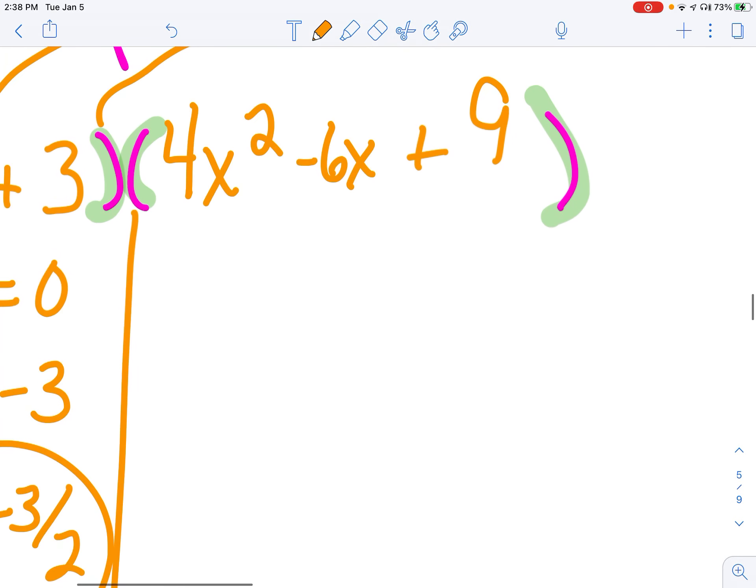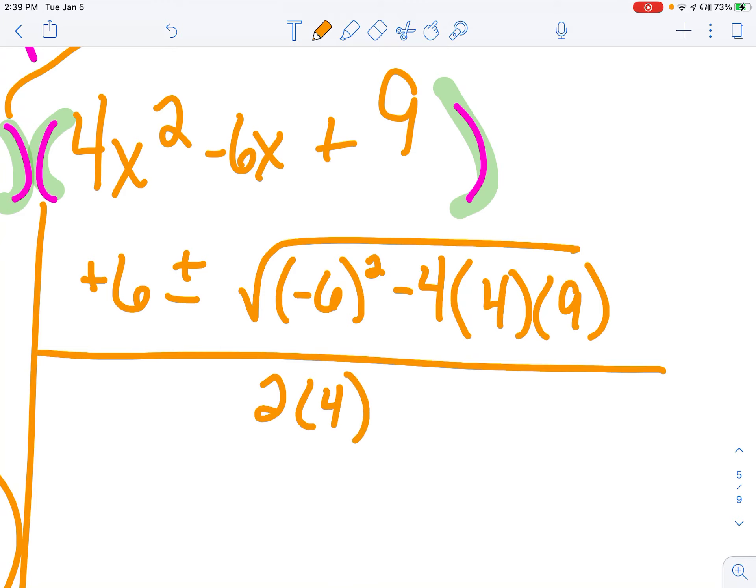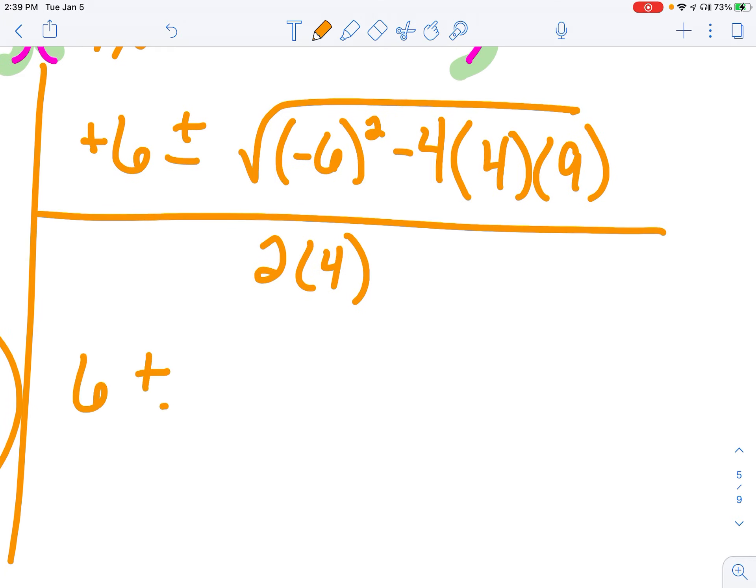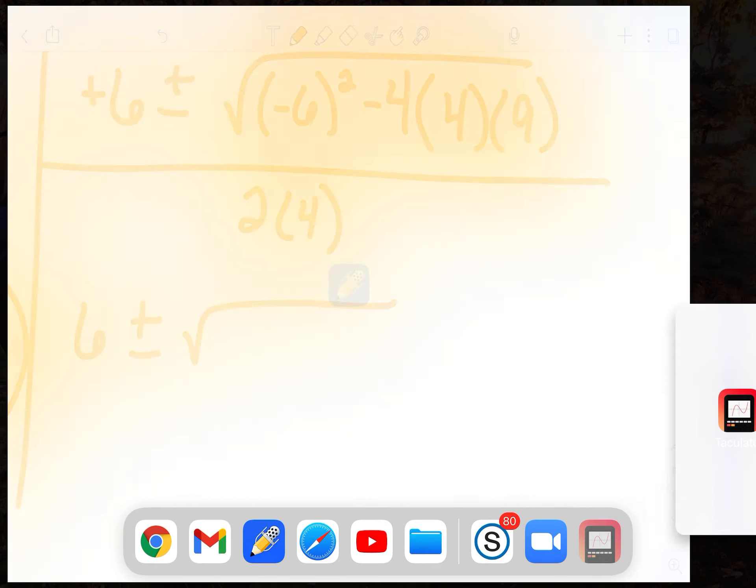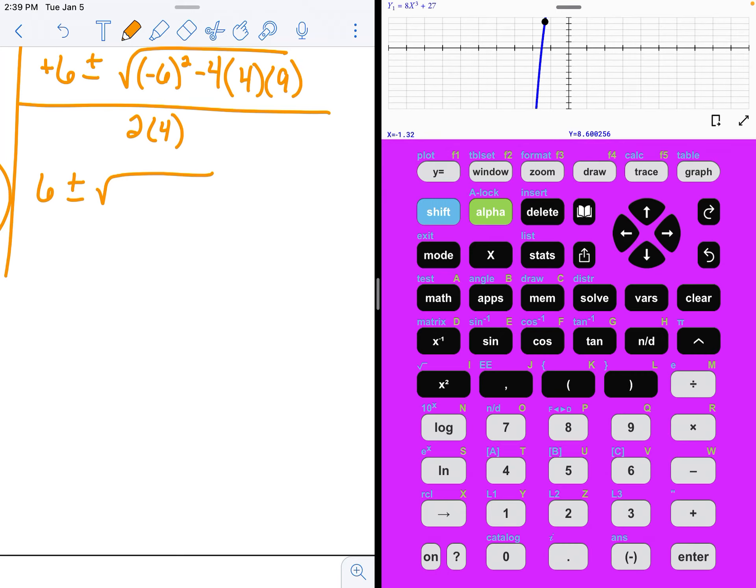Now, this one is never going to factor. You can try all day to factor that by grouping or by box. It won't work. You're going to have to do the quadratic formula. Opposite b plus or minus square root of b squared minus 4ac all over 2a. Now, solve. Let's see. What's that going to be inside of there? I think I can dual screen on this.